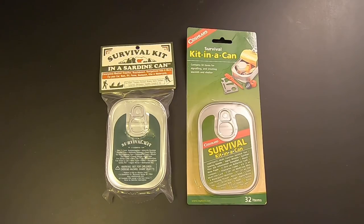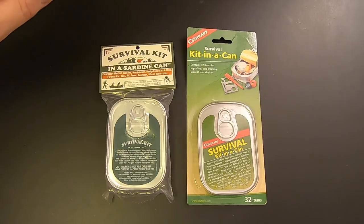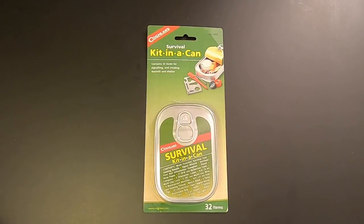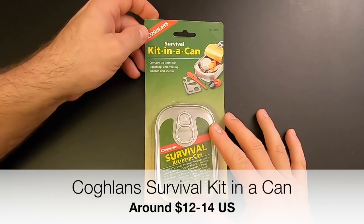Anyway, what I've got here is two sardine can survival kits, one made by Coughlin's and one made by Whistle Creek. We're going to open up both of these and do a side-by-side comparison and see which one is the better of the two. And then after that, we're going to take one or both of these and repack them into a much better survival kit. So let's start off with the Coughlin survival kit in a can.